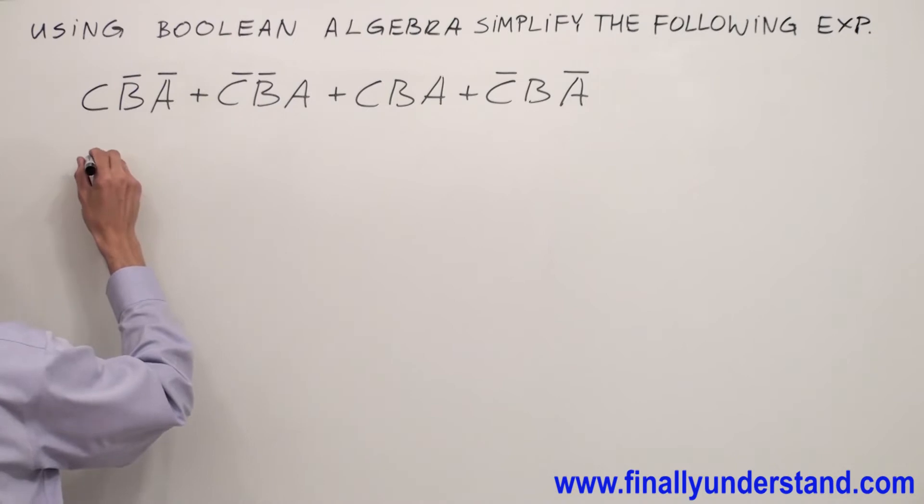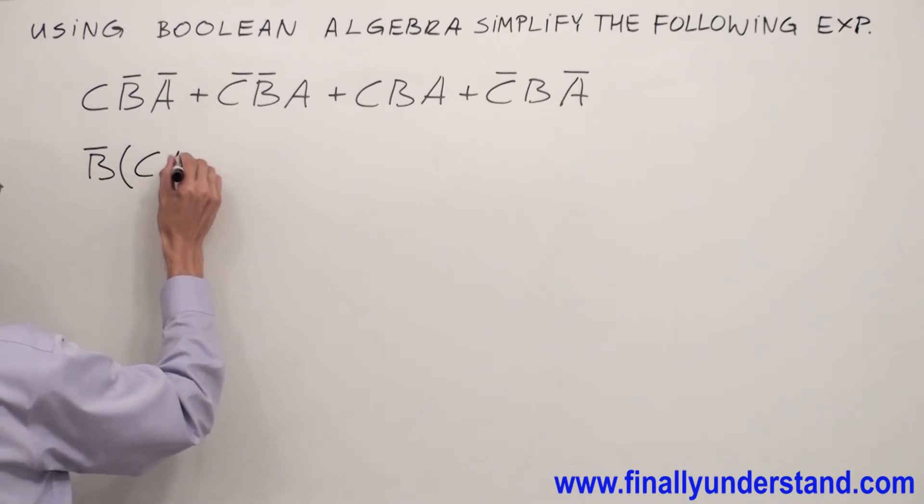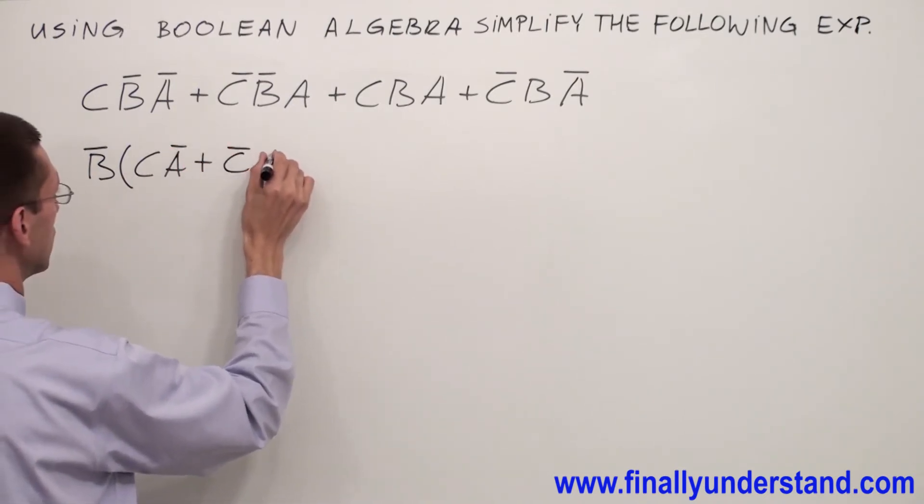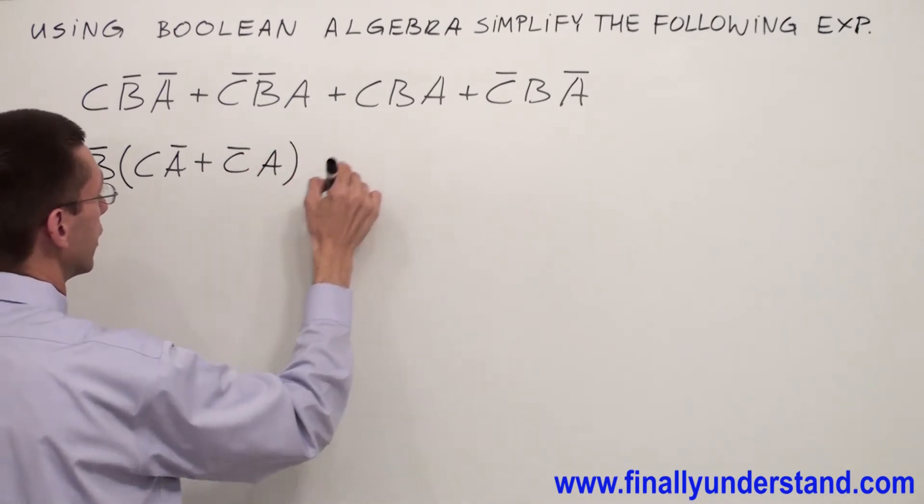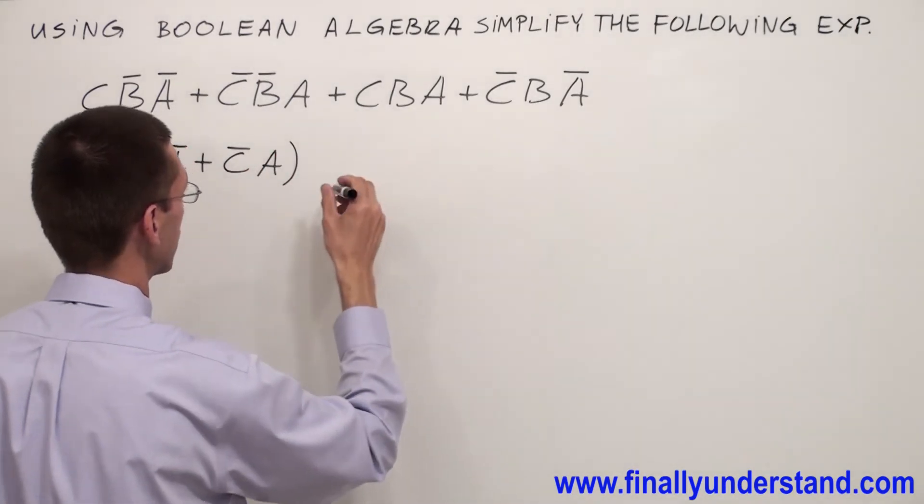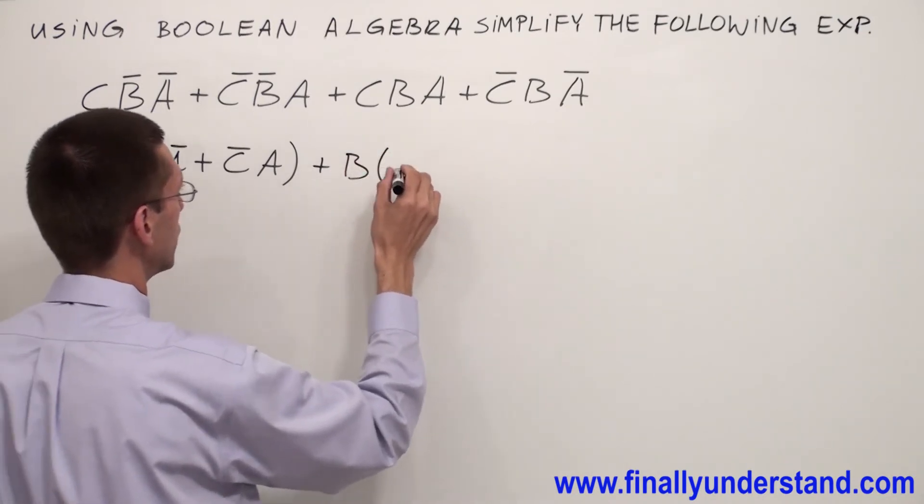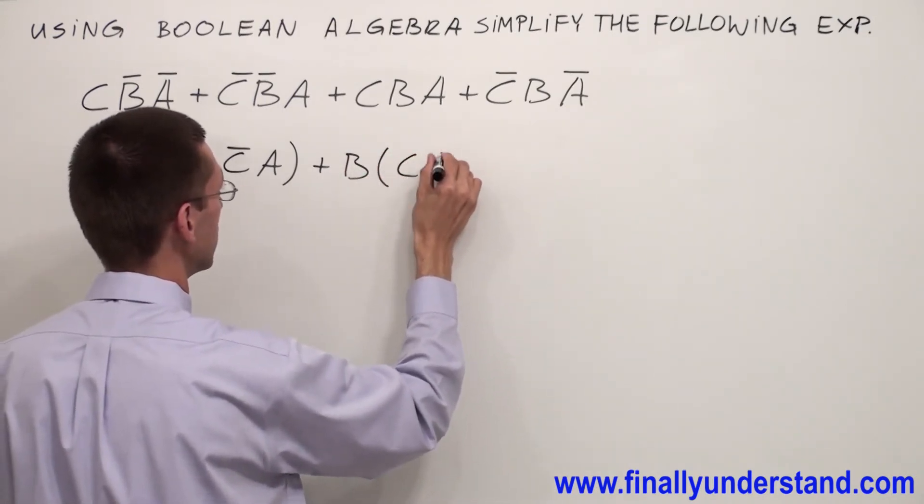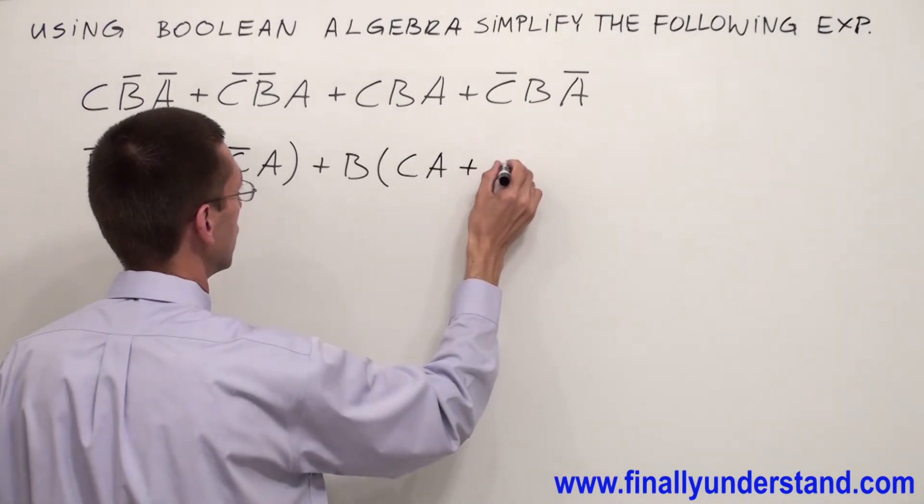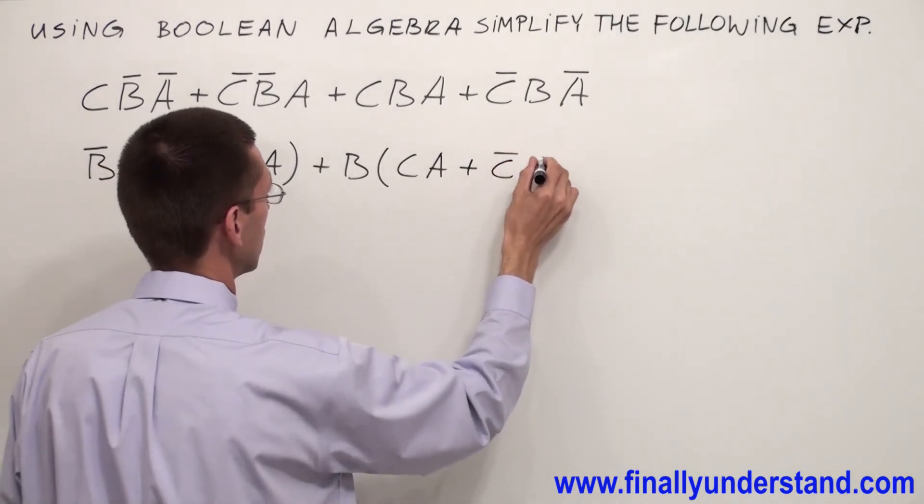I can factorize B̄. Inside the parentheses, I'm going to have C̄A or CĀ. From these two terms, I can factorize B. Inside the parentheses, I'm going to have CA or C̄Ā.